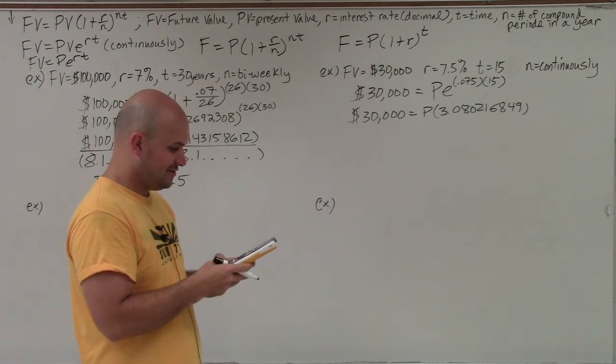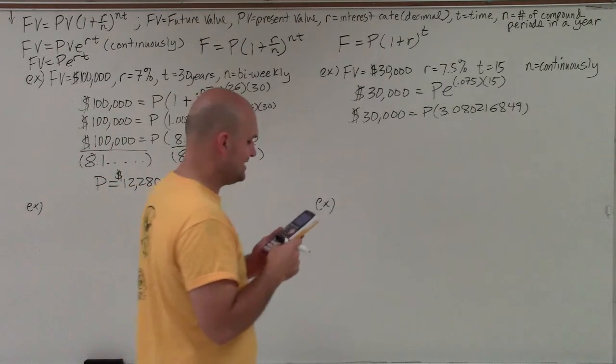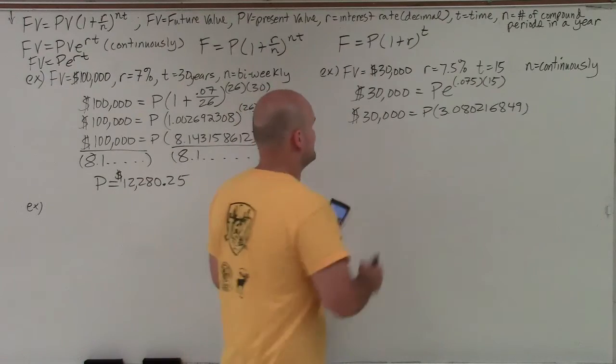So then I'm going to take 30,000 and divide it by that answer. And what I obtain is $9,739.57.